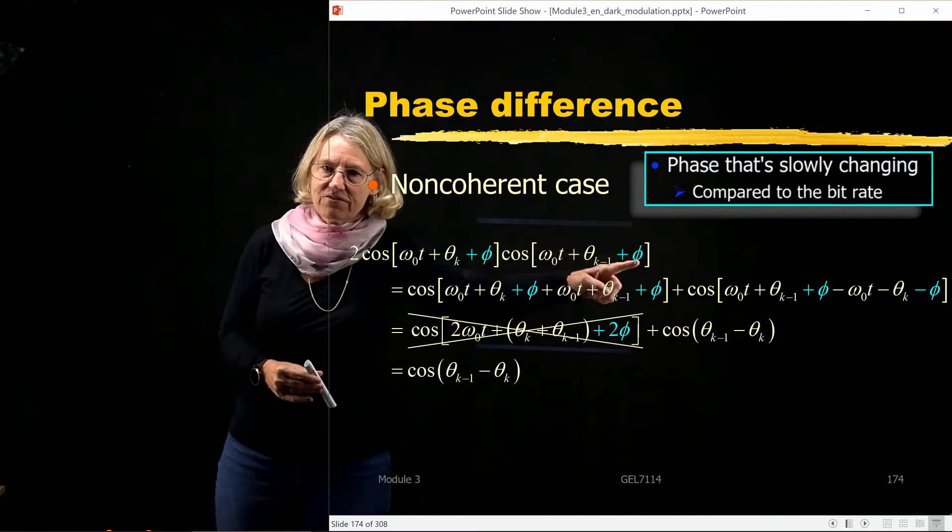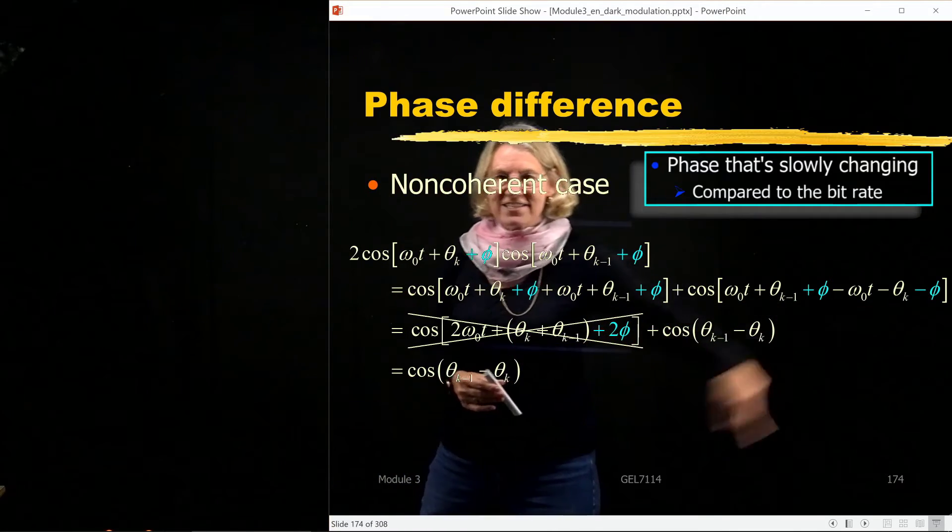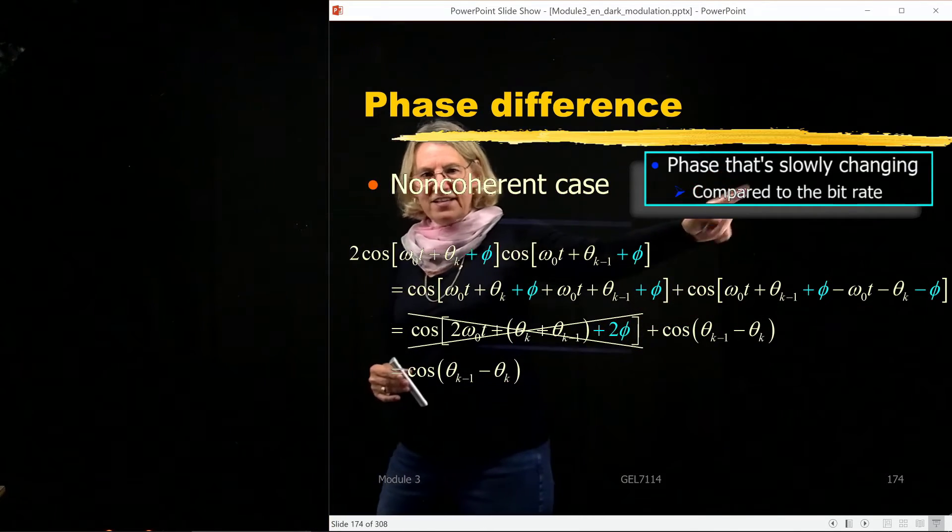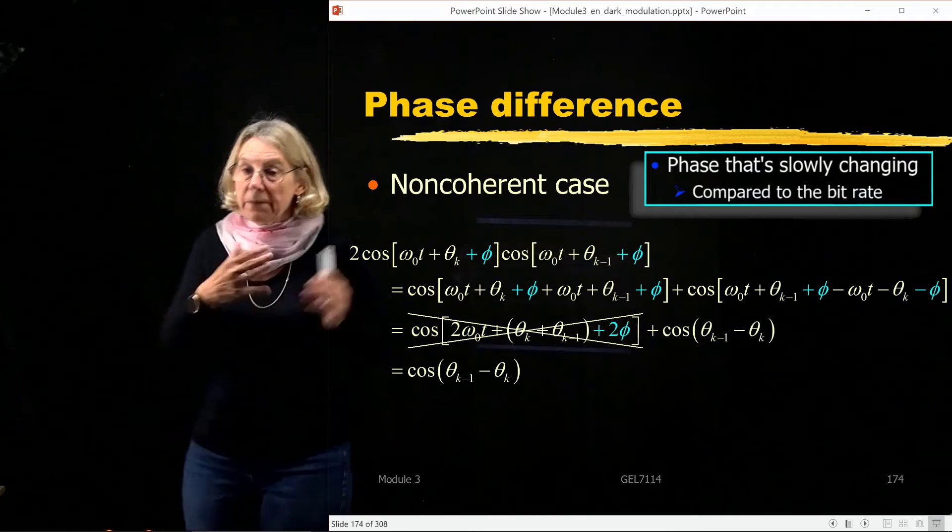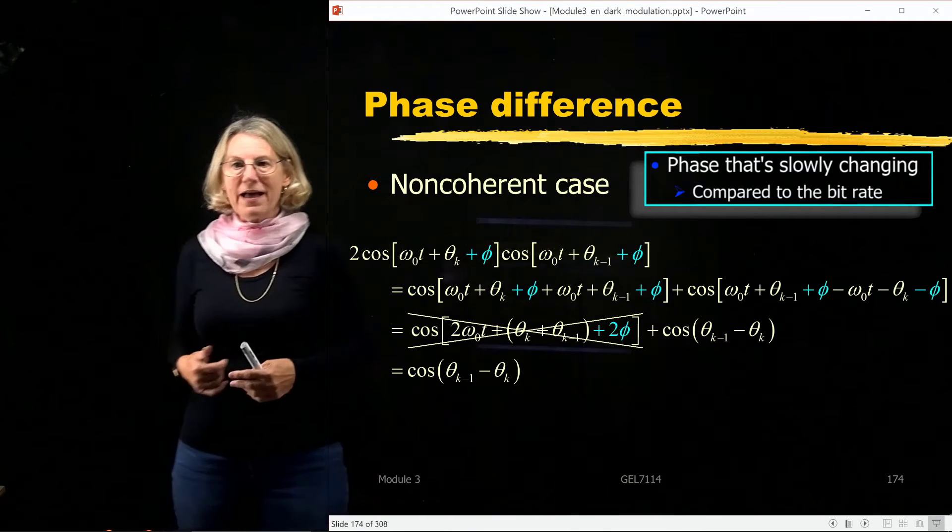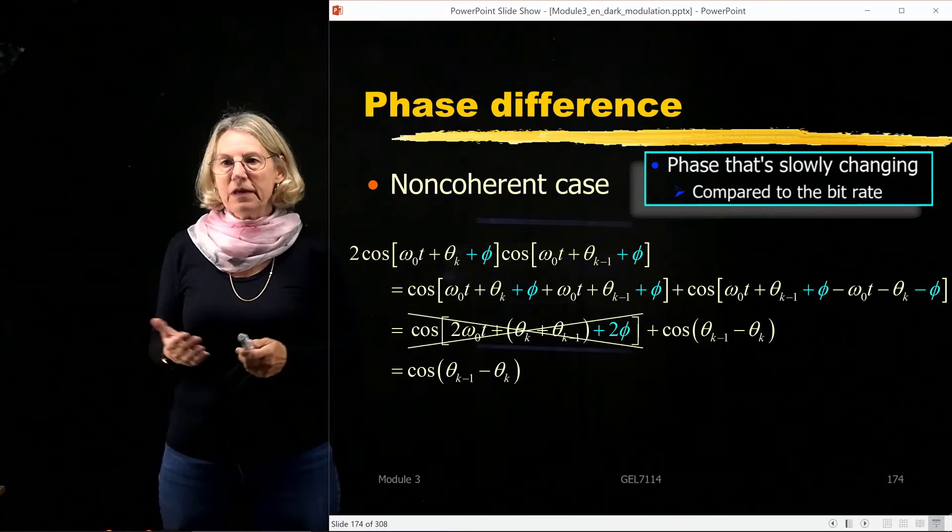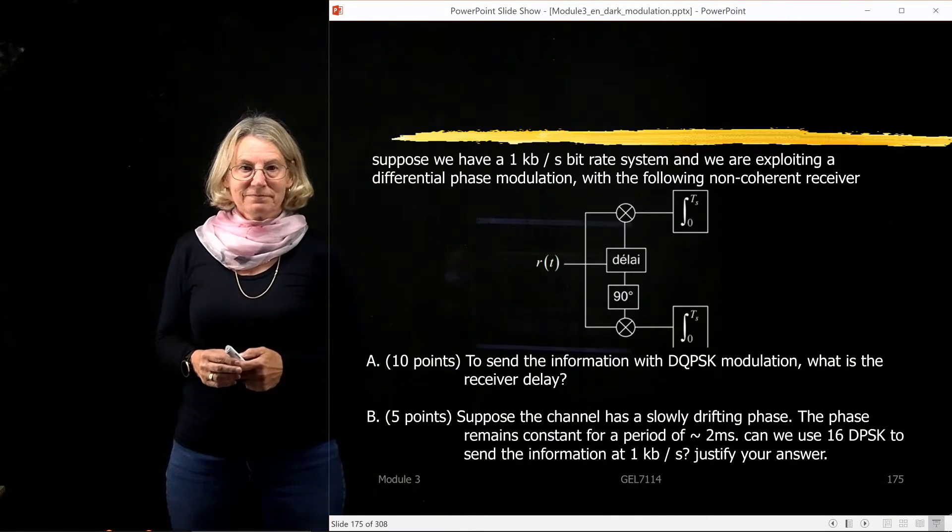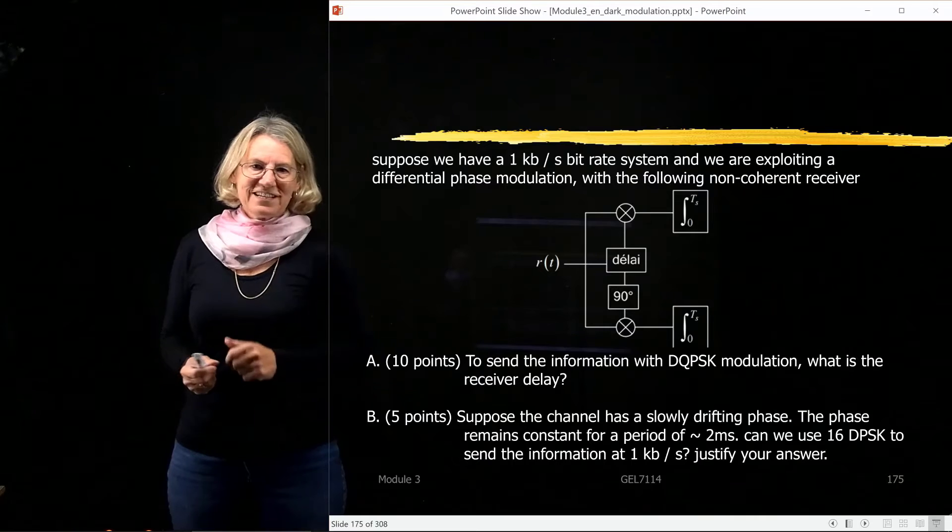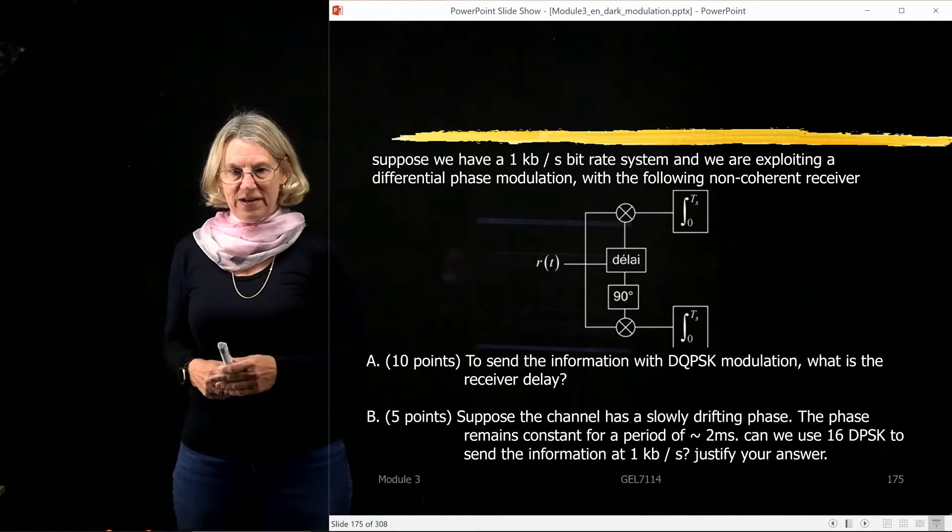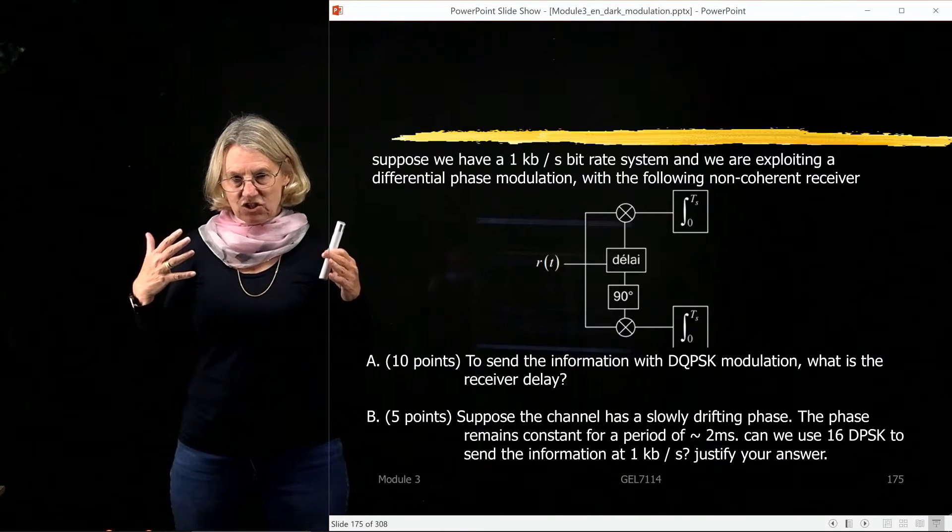I would have one phase here, I'd have another phase here, and these two wouldn't cancel out. So phase that's changing slowly compared to the bit rate, bit rate because I'm talking about binary, and if it were a higher order modulation, it would be compared to the symbol rate.